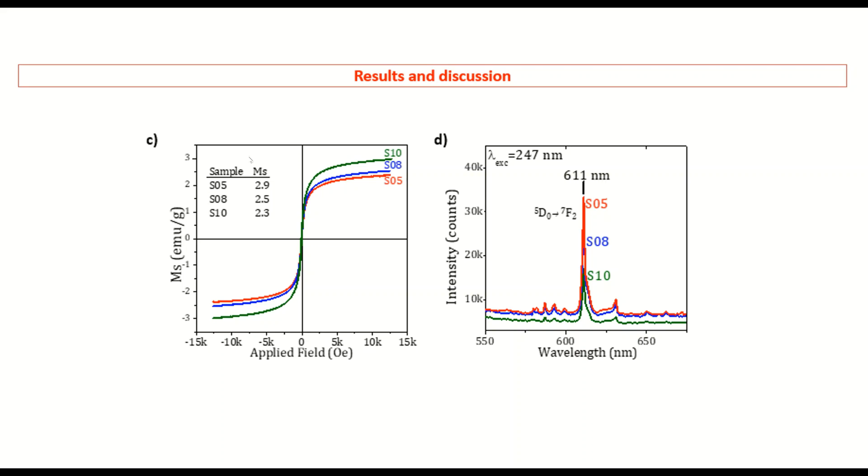We observed that the magnetic saturation improves with the addition of europium, while the emission intensity does not. However, this is important because, on many occasions, the thickness of the europium layer is increased or decreased to improve magnetism.